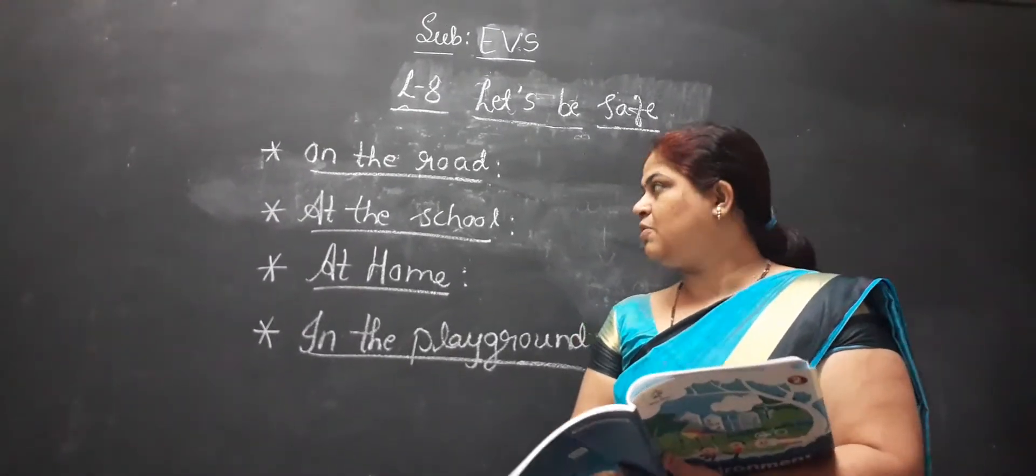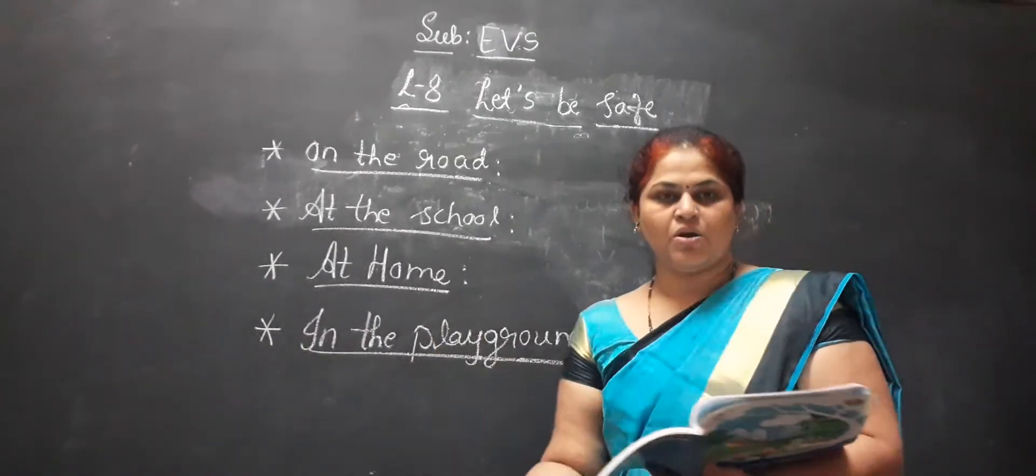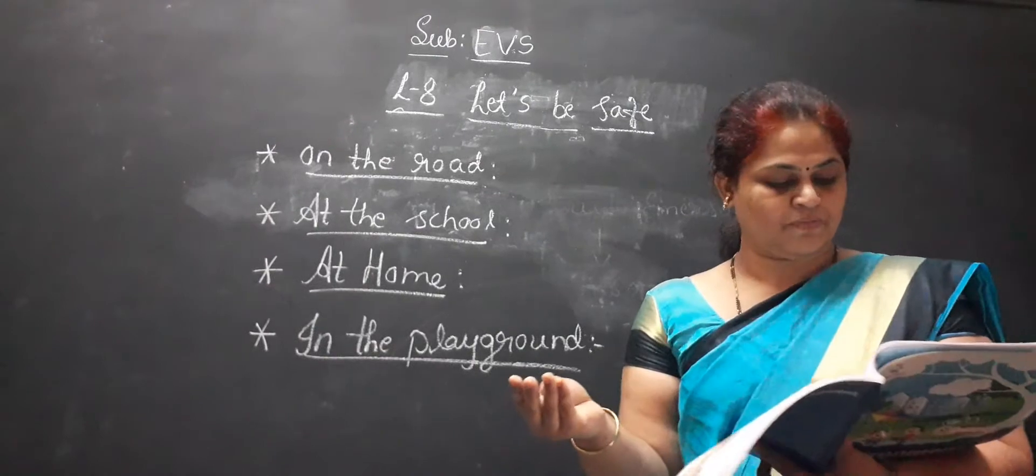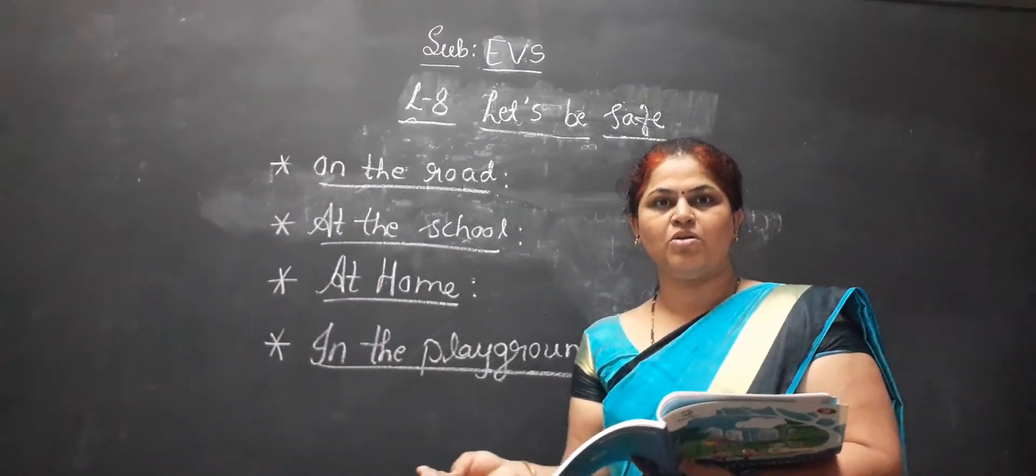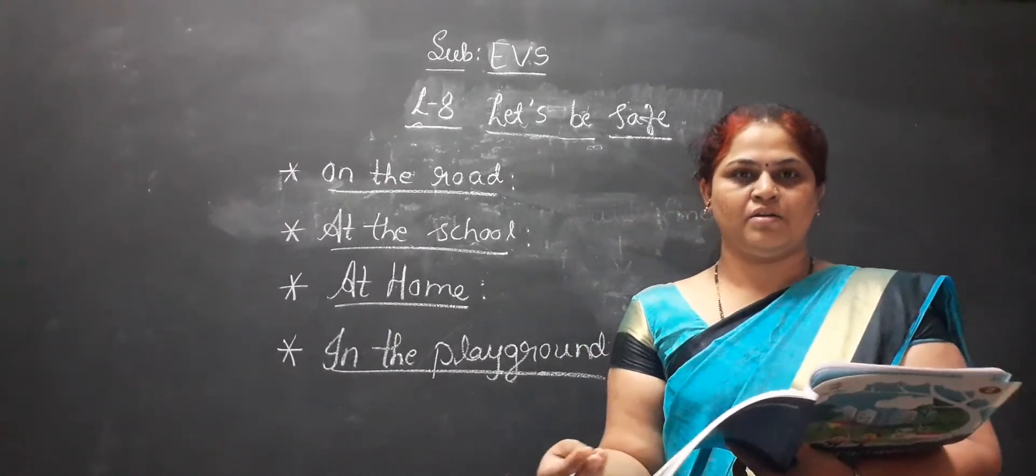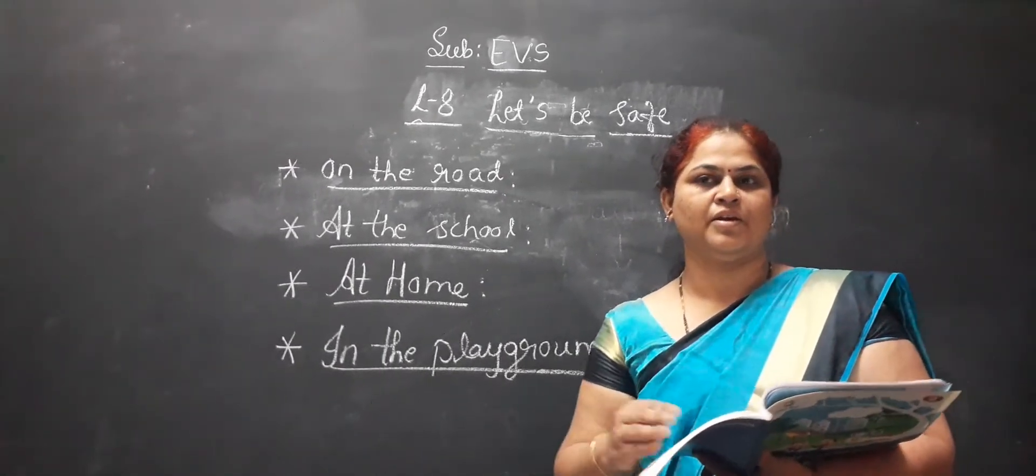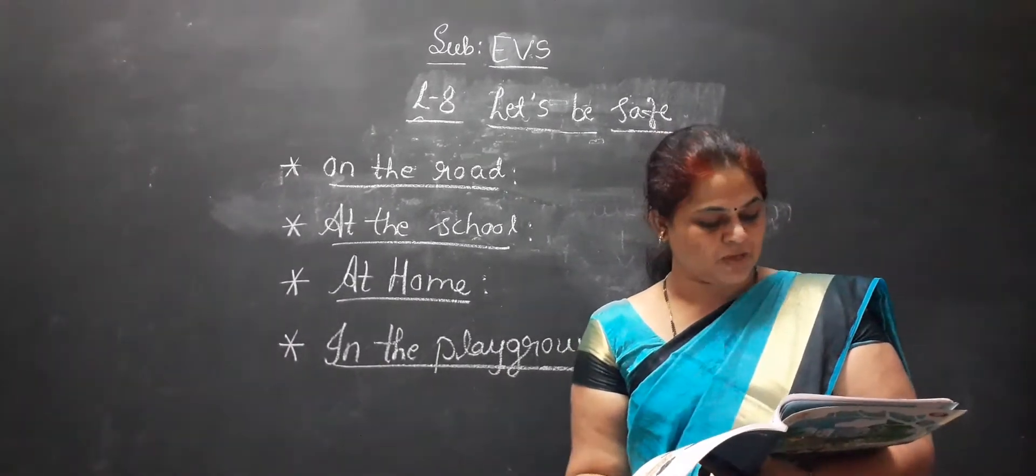So let us follow some safety rules at home. Always keep your books and toys at proper places after using them, because some of them are walking in your home or here and there. If they keep their legs on books and toys, they may fall down.